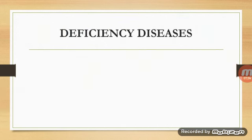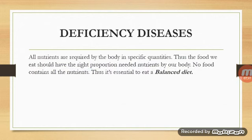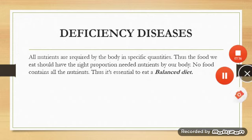Now we will see deficiency diseases. Deficiency is the lack of nutrients — all nutrients are required by the body in specific quantities. The food we eat should have the right proportions of nutrients. Since no single food contains all the nutrients, it is essential to eat a balanced diet.